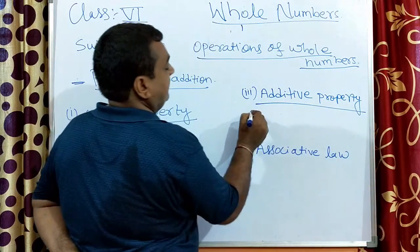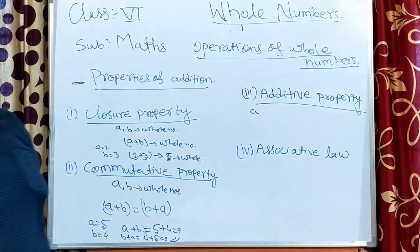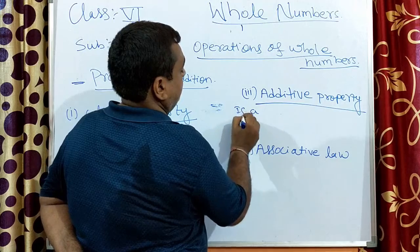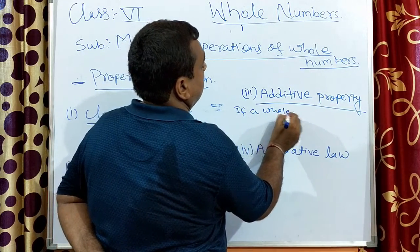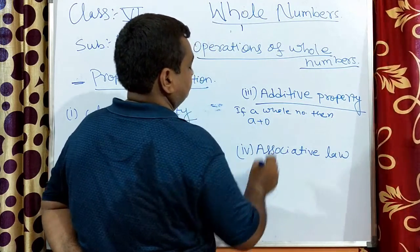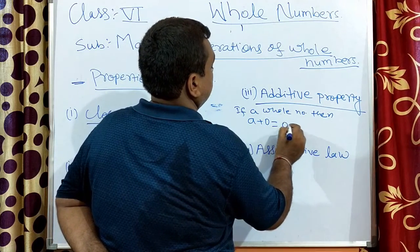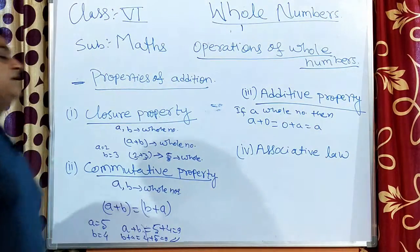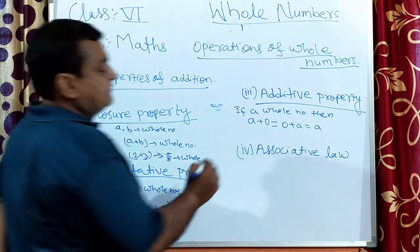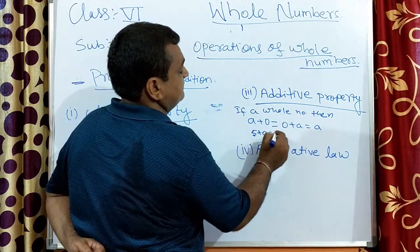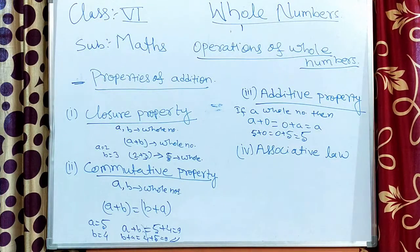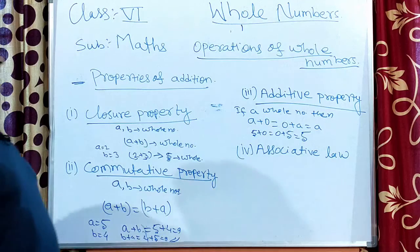The additive property of zero states that if a is a whole number, then a plus zero equals zero plus a equals a. So if zero is added to any number, the result will be the number itself. For example, five plus zero equals zero plus five equals five.